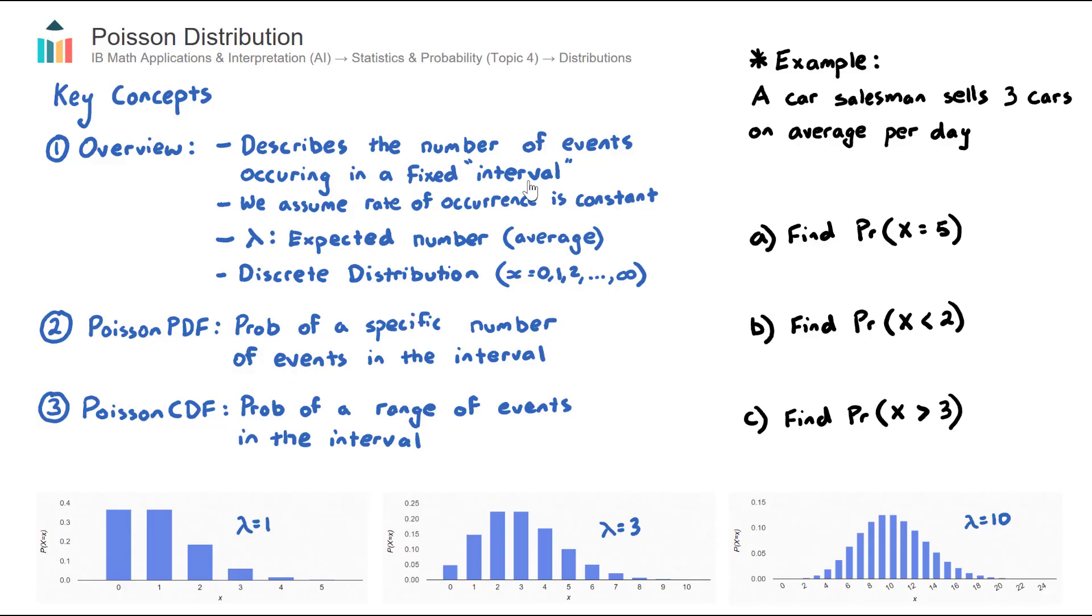For a Poisson Distribution, we assume that the rate of occurrence of these events is constant. A key number in a Poisson Distribution is this lambda symbol here.